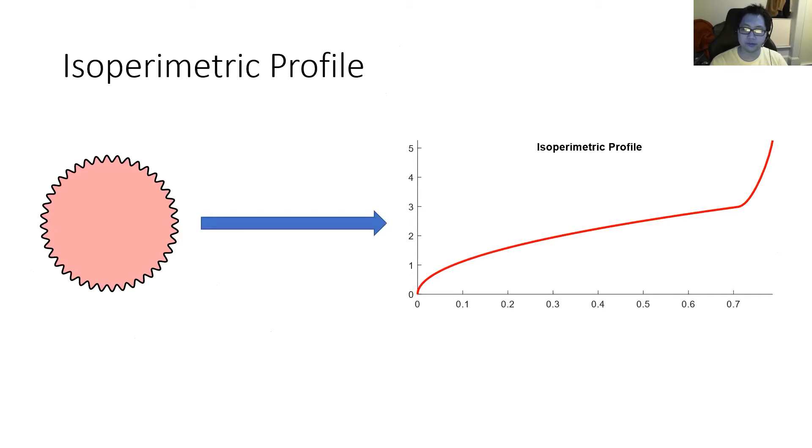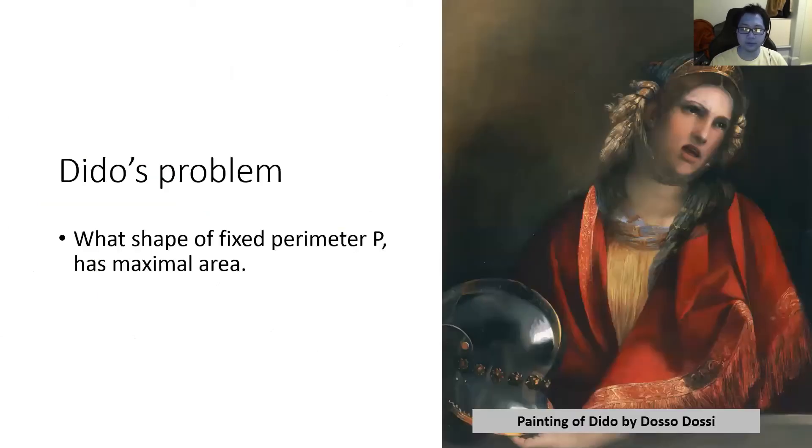In comes the isoperimetric profile, which says that instead of measuring geometric complexity with just one number, you should measure it with an entire profile. This captures the complexity of a shape at multiple resolutions. To define the isoperimetric profile more formally, let's consider Dido's problem again and add the following extra constraint.